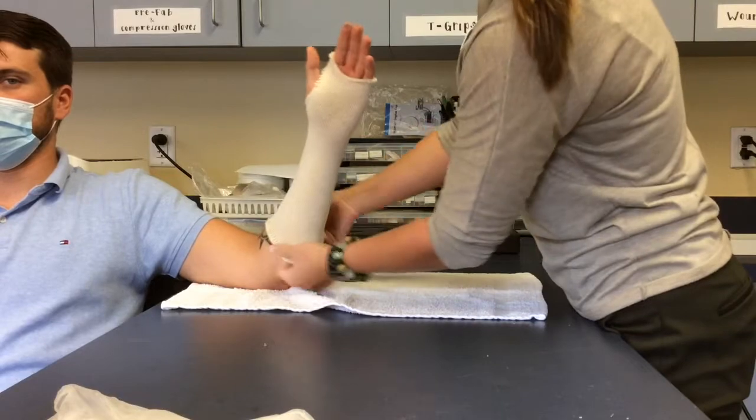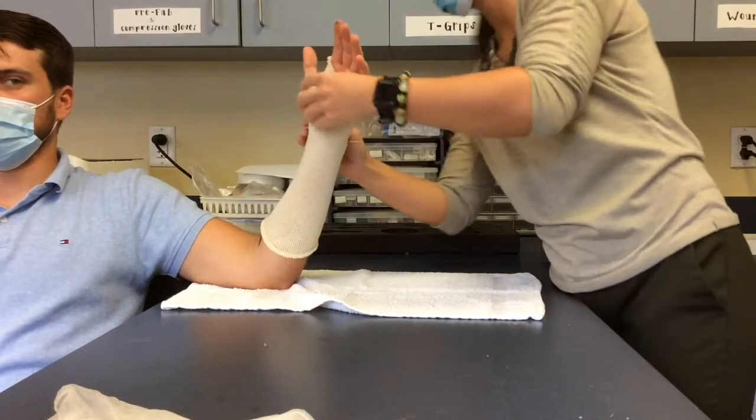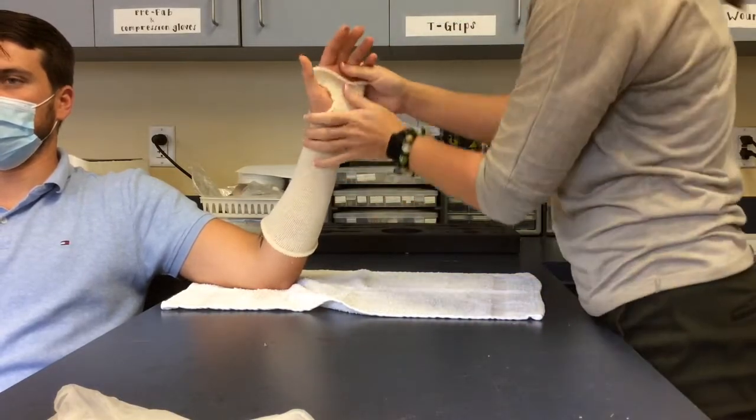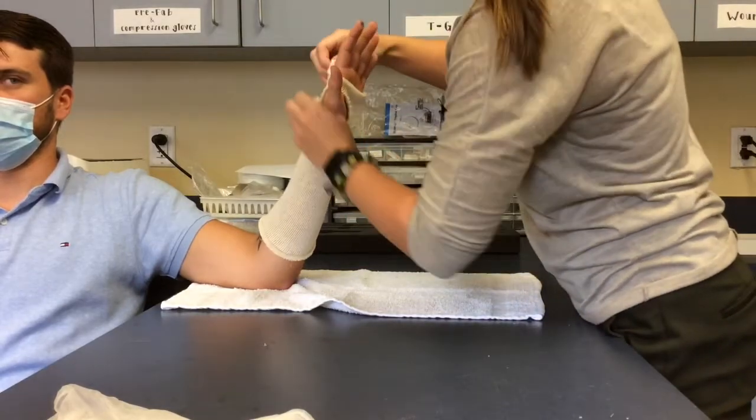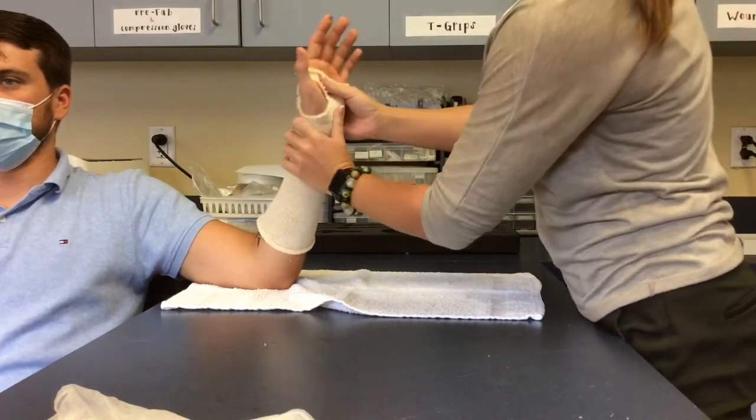When you cut the stockinette, make sure that it clears the DPC and also there is a hole for the thumb, clearing part of the thenar eminence.